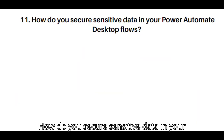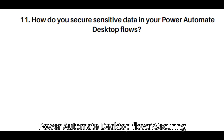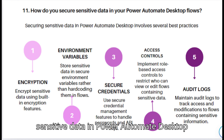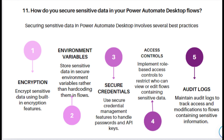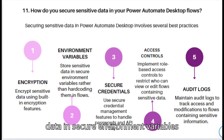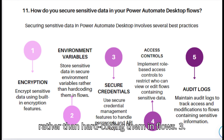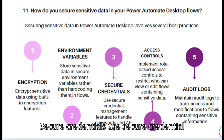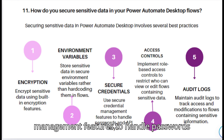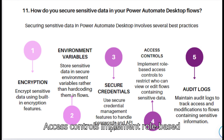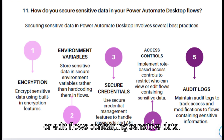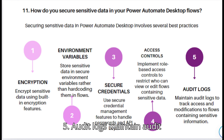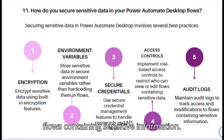Question 11: How do you secure sensitive data in your Power Automate Desktop flows? Best practices include: 1. Encryption: encrypt sensitive data using built-in encryption features. 2. Environment variables: store sensitive data in secure environment variables rather than hard coding them in flows. 3. Secure credentials: use secure credential management features to handle passwords and API keys. 4. Access controls: implement role-based access controls to restrict who can view or edit flows containing sensitive data. 5. Audit logs: maintain audit logs to track access and modifications to flows containing sensitive information.